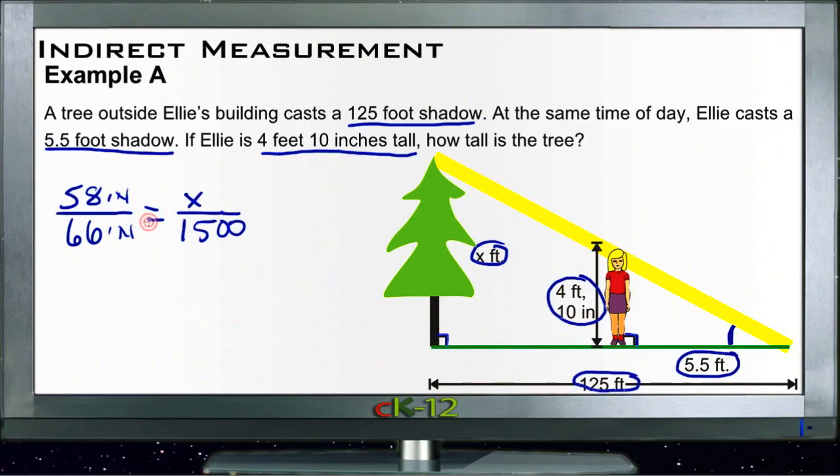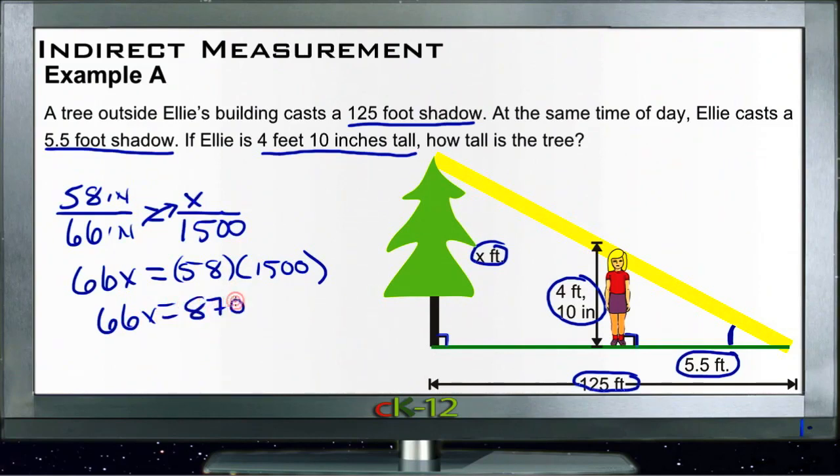So what we need to do then is cross multiply, and we'll get 66x equals 58 times 1500, which is 87,000. So 66x equals 87,000. Divide both sides by 66.